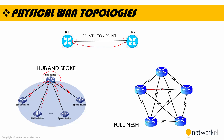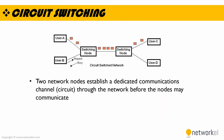We also have a full mesh topology, which is a really great topology that provides high availability and all links are redundant. For example, if I want to get from A to B, I can use multiple paths. In a full mesh topology, it doesn't matter if one of the links is down because redundant links are in place. However, it is very hard and expensive to implement full mesh topology.